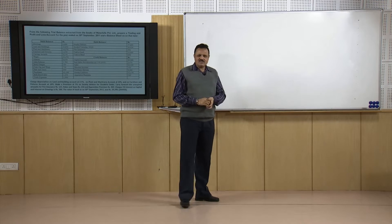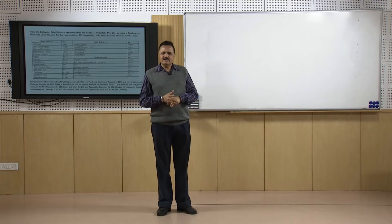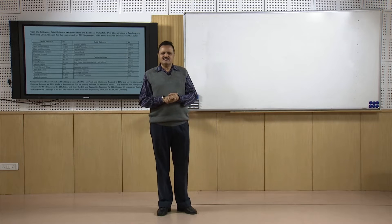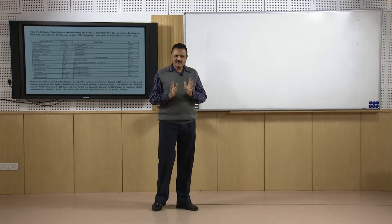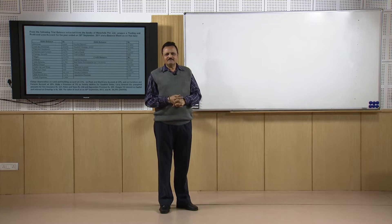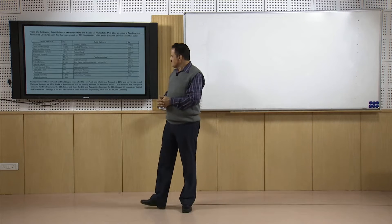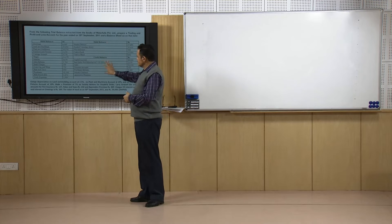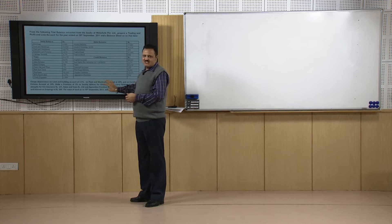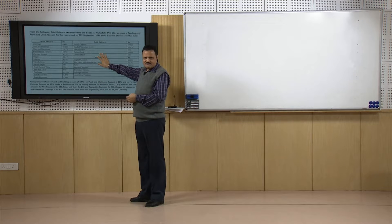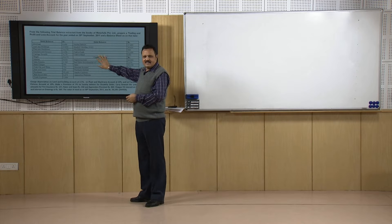In my previous lecture I was talking about the different adjustments. We discussed about 14-15 adjustments — that is additional information which is outside the trial balance for which the double entry system has not been completed. We will have to complete that double entry process for those additional items. This additional information is called adjustments and we will have to adjust this in the trial balance items.